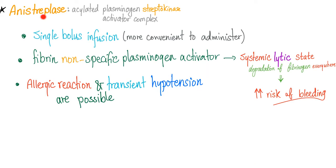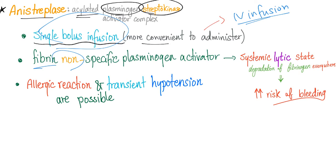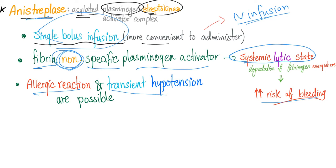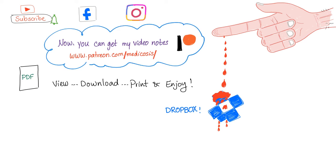Anistreplase is derived from streptokinase with added plasminogen and an acyl group. It's also in the inferior, fibrin-non-specific class and will cause systemic lytic state and increased bleeding risk. However, it is administered as a single bolus infusion, making it more convenient than streptokinase, which requires a 30-to-60-minute IV infusion. Allergic reactions and transient hypotension are also possible with anistreplase. The only advantage of anistreplase is its single-bolus administration.